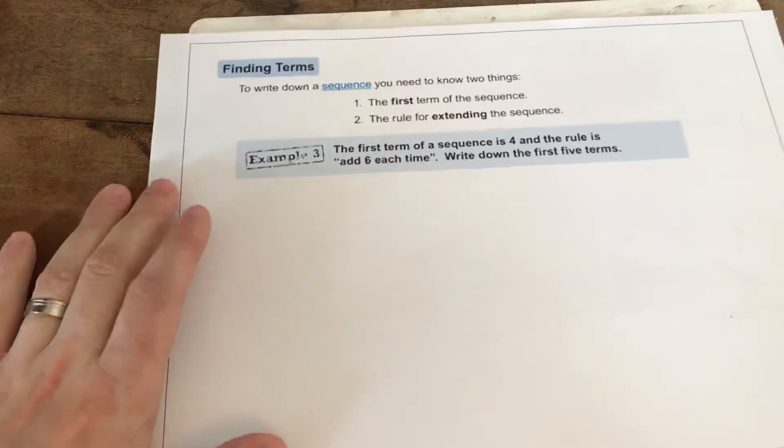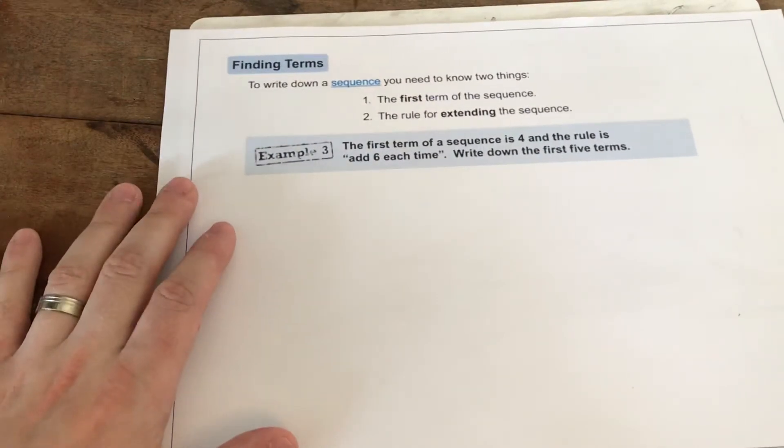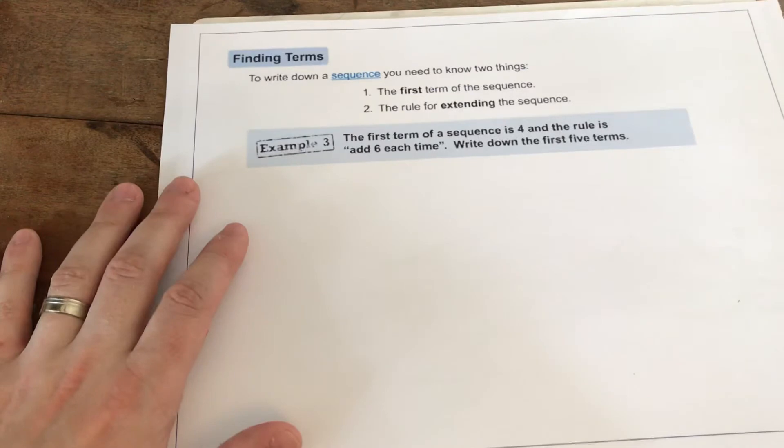So, if we have this example here, it says the first term of the sequence is 4, and then the rule is add 6 each time.